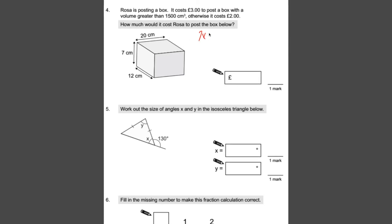So let's do that now. 7 times 12, I know it's 84. And then we times 84 by 20. If we do 84 times 10, it's 840. And double that, it's 1,680. So that is how many centimeters cubed it is. That's its volume. Now if it's greater than this number here, it's going to cost 3 pounds. So it is greater than that, as you can see. So it is going to cost 3 pounds to post the box.